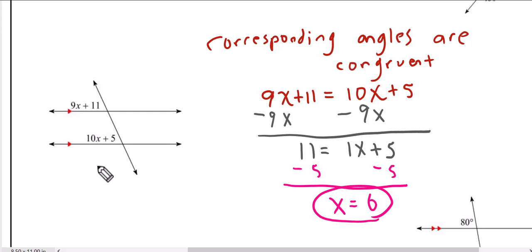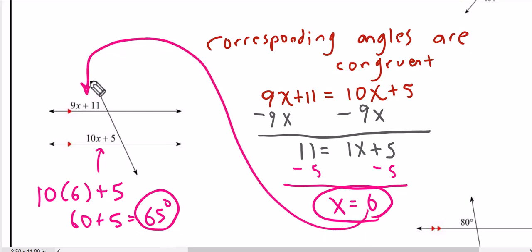However, if we want the value of the actual measurement of the angle, we have to plug this 6 back into x. So we do that here. We get 60 plus 5. This is a 65 degree angle. I would strongly suggest that you take the same 6 and put it in here and see what you get. You should get 65 degrees as well because both of these angles are the same measurement. They're both congruent. They're corresponding angles.